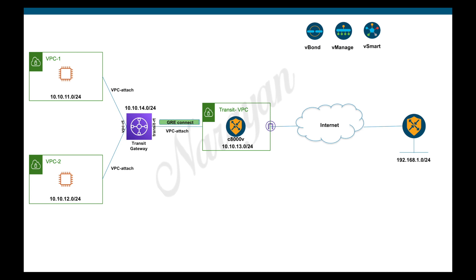The topology we will use for the demo is the same topology we used for the VPN-based attachment videos. I have two spoke VPCs in AWS already configured with the required subnets and route tables. I also have a C8000V instantiated in the Transit VPC and an on-premise router, both connected to the SD-WAN controller and having IPSec connectivity between them. You can look at my earlier videos for the steps to manually bring up the C8000V in AWS. Now we will create a TGW, connect our host VPCs to it, and also connect our Transit VPC to the TGW using GRE to bring up end-to-end connectivity.